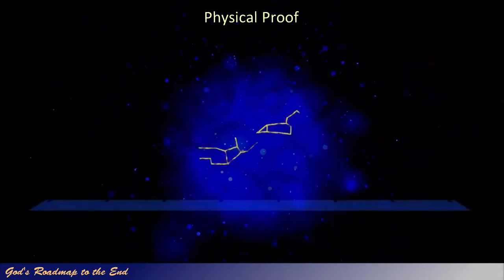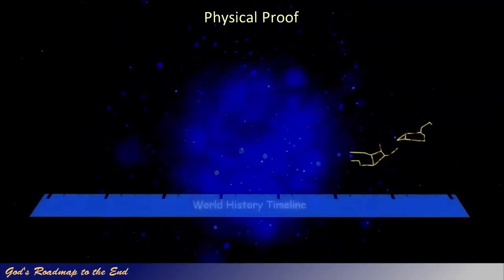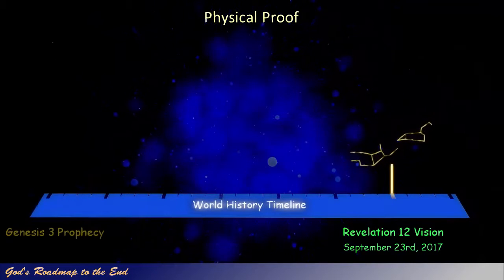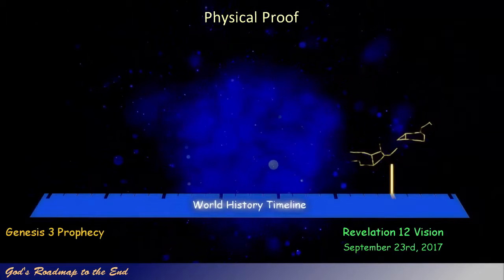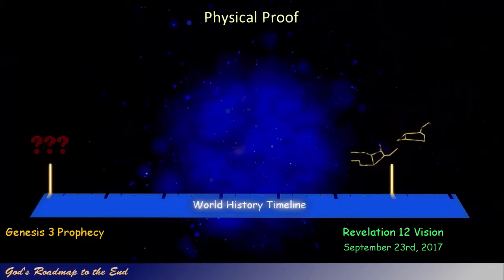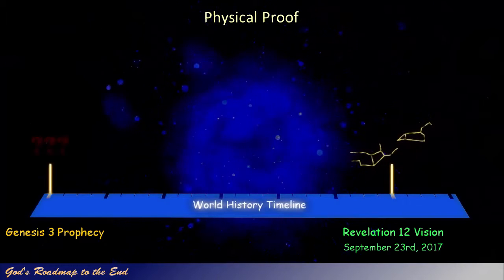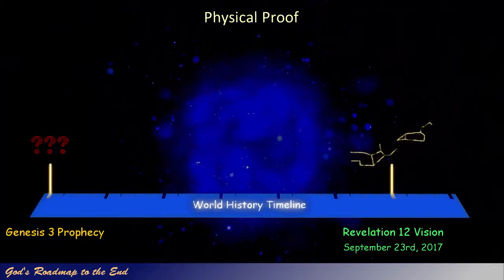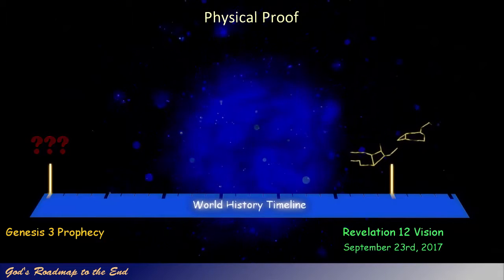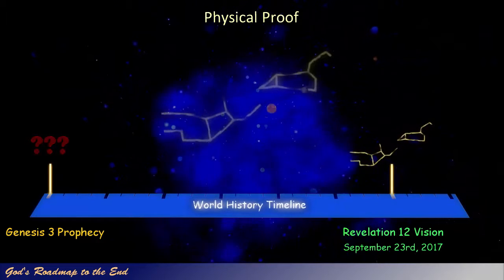After seeing how the vision given to John in Revelation 12 is marked with the physical celestial representation and how it is linked to the prophecy given in Genesis 3 verse 16, I wondered if God would also mark the prophecy given to man in the Garden of Eden with a similar celestial marker. This, in my opinion, would confirm and provide physical proof for the fact that we are indeed looking at the correct prophecy and vision that Daniel was told to seal up.